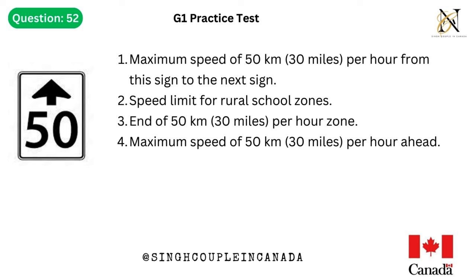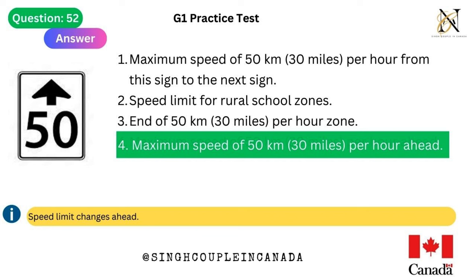Question 52. This traffic sign means: 1. Maximum speed of 50 km/h (30 mph) from this sign to the next sign. 2. Speed limit for rural school zones. 3. End of 50 km/h (30 mph) zone. 4. Maximum speed of 50 km/h (30 mph) ahead. Answer is 4. Maximum speed of 50 km/h (30 mph) ahead — speed limit changes ahead.